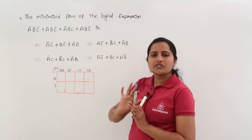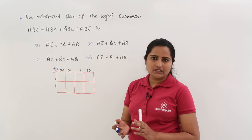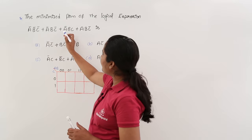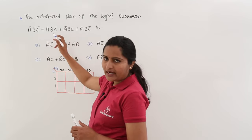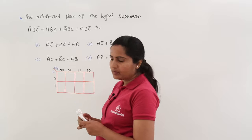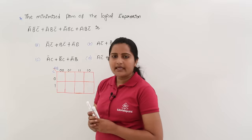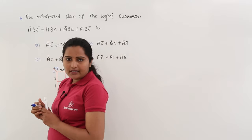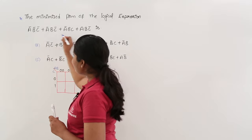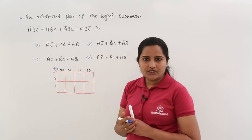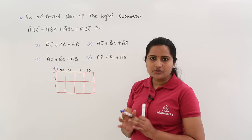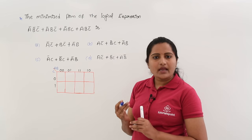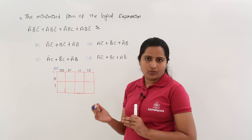Here, the same expression we can solve by using Boolean algebra. For example, you can take common of ā in these two terms and solve the problem, but by using K-map it may be simpler. Now I am decoding the values — in this sum of products equation, all are product terms, where the complement term is considered as 0 and normal variable is considered as 1.